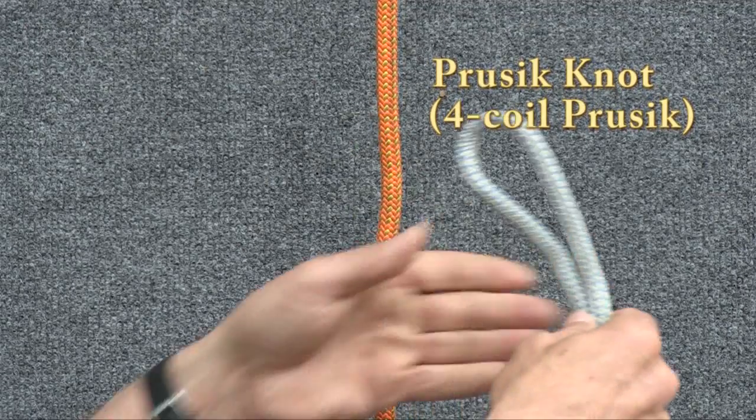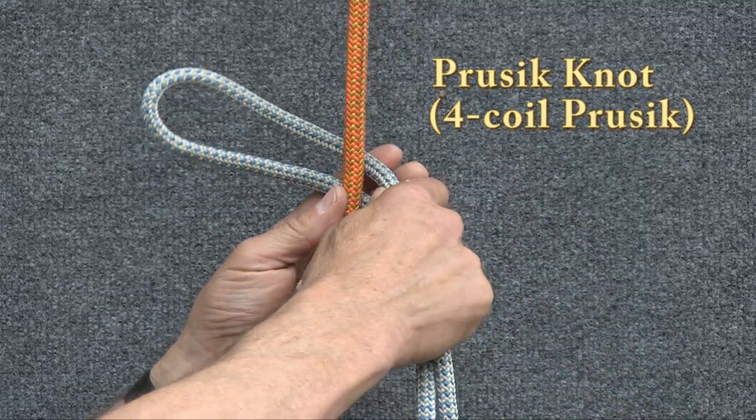To tie a Prusik knot, you take your Prusik loop and you put it behind the rope like that.